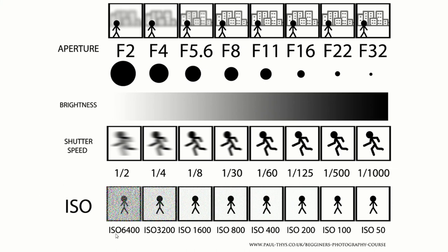Now if we look at the ISO, we can see here we've got ISO 6400 — this is going to be really grainy — and then as we go down the ISO settings to ISO 50 for example, there will be no grain in the picture at all. So ideally we're going to want to keep to the lowest ISO as possible and only use higher ISOs in lower light conditions. Now grain will look slightly different on different cameras; some will handle it better than others, but they will always find the higher the ISO, the grainier the picture.